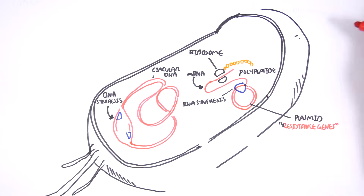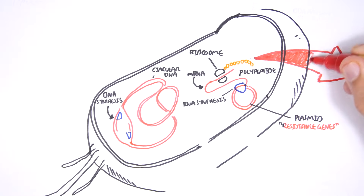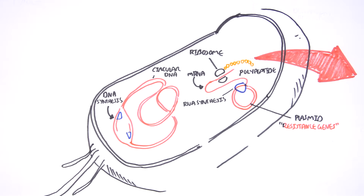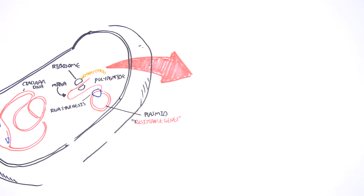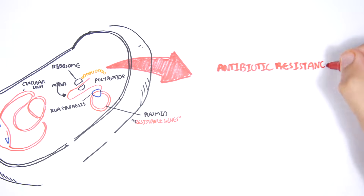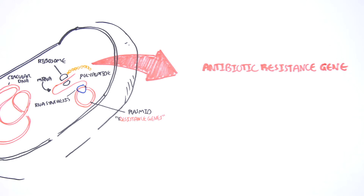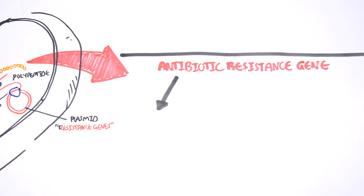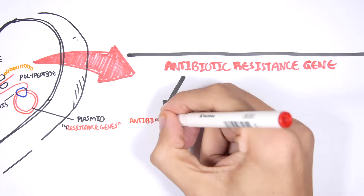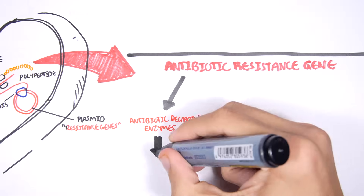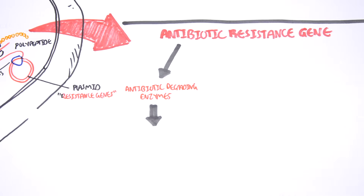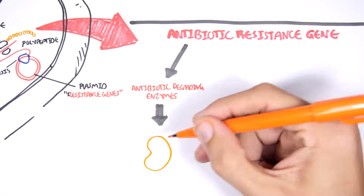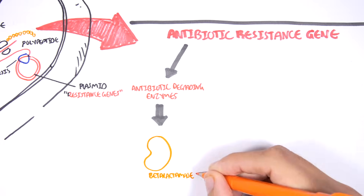Let's have a closer look by zooming in. We will look at some examples that are not specific to one type of bacteria, because each bacteria has its own unique resistance gene. The antibiotic-resistant genes, usually found on the plasmid, result in the synthesis of proteins that can form and become an antibiotic-degrading enzyme. A good example of this are beta-lactamases, which essentially break beta-lactam rings.